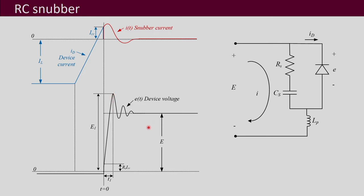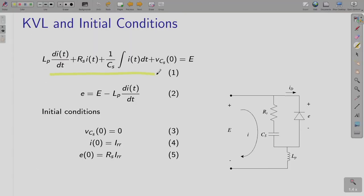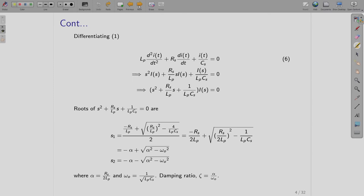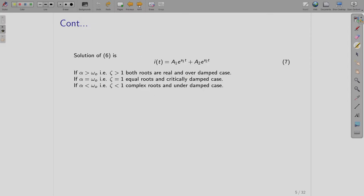We have to derive an expression for this. I_RR is the reverse recovery current, which is the current at t = 0. The initial capacitor voltage is 0, meaning there is no charge on the capacitor at t = 0. This was the KVL equation written for this loop, and the second equation is E minus L_P di(t)/dt. With initial conditions applied, we obtained the differential equation with roots s1 and s2, damping ratio zeta = alpha/omega_0, and the solution i(t). We discussed the under-damped case.